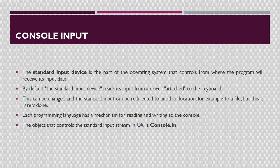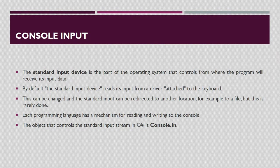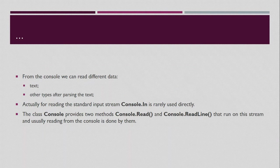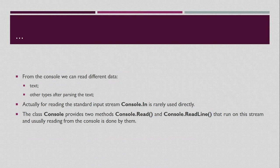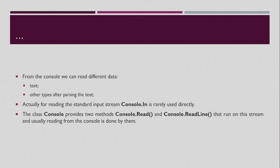To input values using a console application in C#, you have to use a class — the standard input stream class called Console. In this class there are methods which help to input data and receive input from the user. This class works only with two main data types — string and other C# data types — and you need to parse the text into a number after reading it. To read the standard input stream you can use Console.In, but this is rarely used. Instead you commonly use Console.ReadLine.